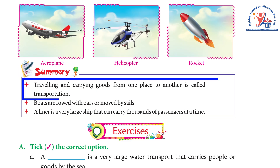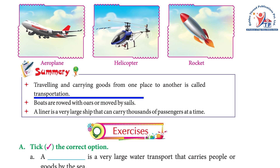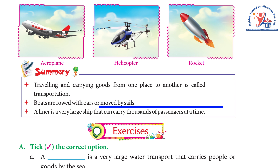Summary: Traveling and carrying goods from one place to another is called transportation. Boats are rowed with oars or moved by sails. A liner is a very large ship that can carry thousands of passengers at a time.